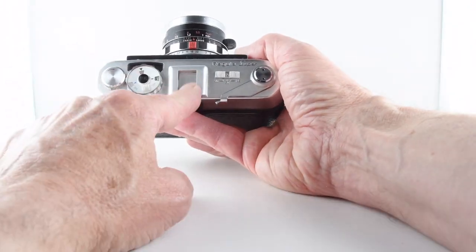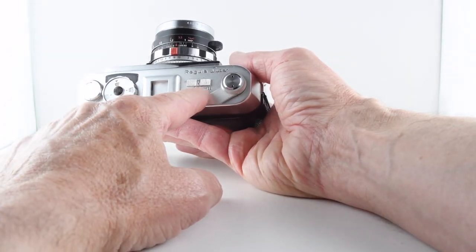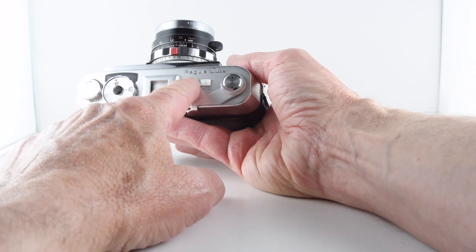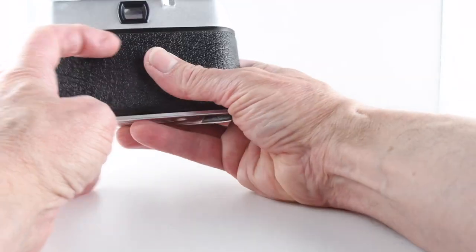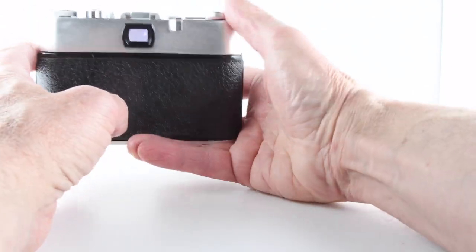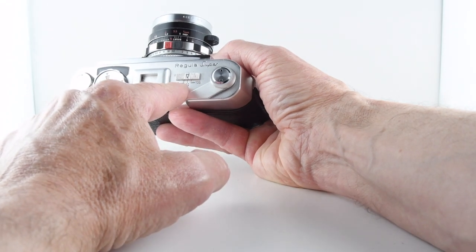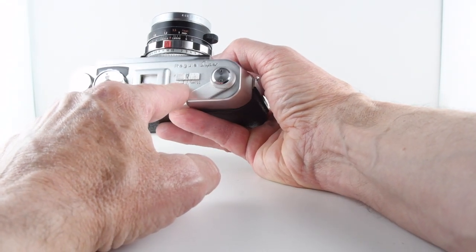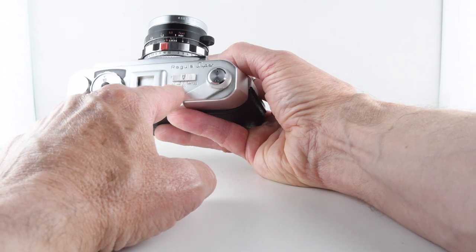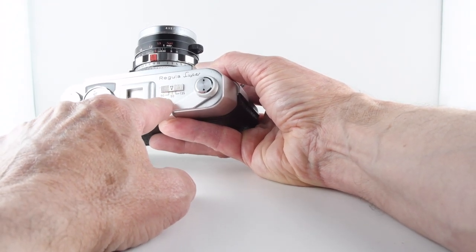It has a cold shoe, and interestingly it has a little slider here which, when you look through the viewfinder, provides us with a boundary for that particular lens. Although it's a rangefinder camera, it can take other lenses.